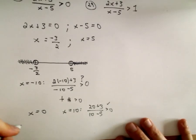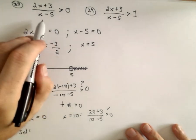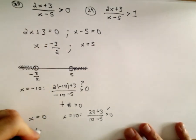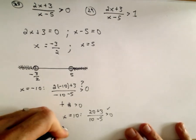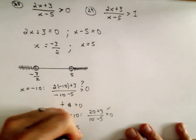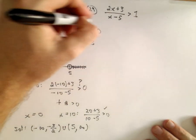So our solution set for the first rational inequality will be from negative infinity to negative 3 halves, parentheses, union, parentheses, positive 5 up to infinity. So again, not too bad.